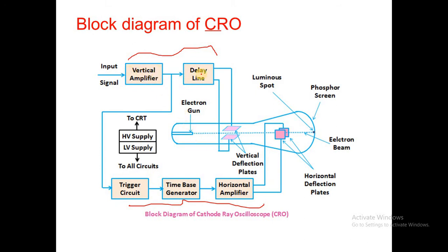The vertical deflection system consists of a vertical amplifier and delay line. The input signal is given to the vertical amplifier. In the horizontal deflection system we have a trigger circuit, time base generator (also called sweep generator or ramp generator), and horizontal amplifier. The block diagram is mainly divided into three parts: CRT, horizontal deflection system, and vertical deflection system.